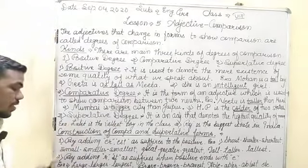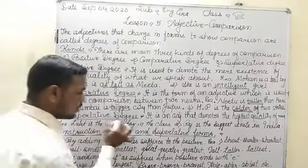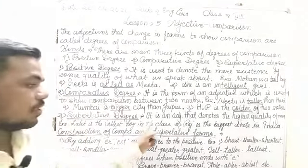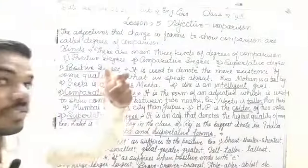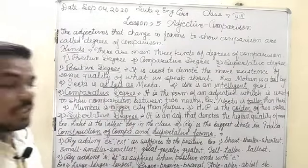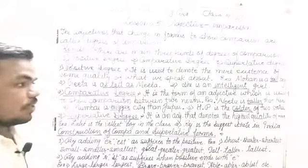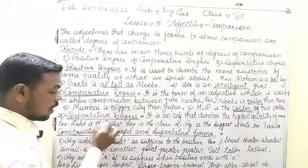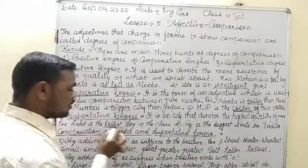Third is superlative degree. In superlative degree, it is an adjective that denotes the highest quality of a noun. We express the highest quality of any noun — just like 'Lalit is the tallest boy in the class,' meaning there is no boy as tall as Lalit in the class.